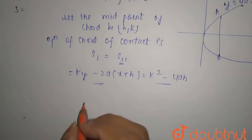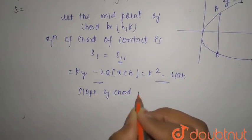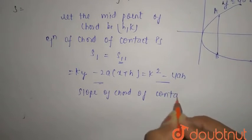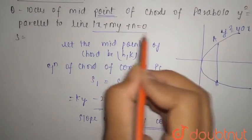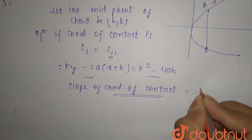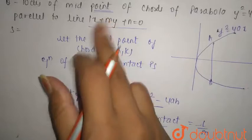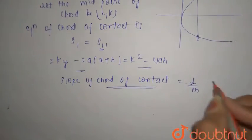So here, slope of chord of contact: here we are going to talk about chord of contact, which is parallel to the line lx + my + n. So slope of chord of contact is nothing but -l/m from this line.